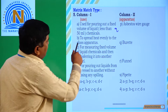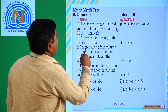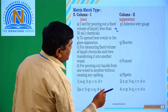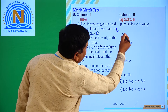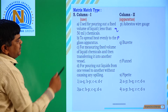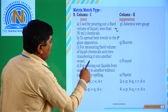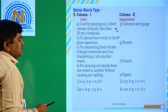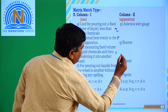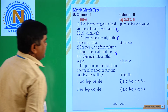Option B: to spread heat evenly to the glass apparatus — option B is related to asbestos wire gauge, so option B matches P. Option C: for measuring a fixed volume of liquid chemicals and then transferring into another vessel — option C is related to pipette, so option C matches S.